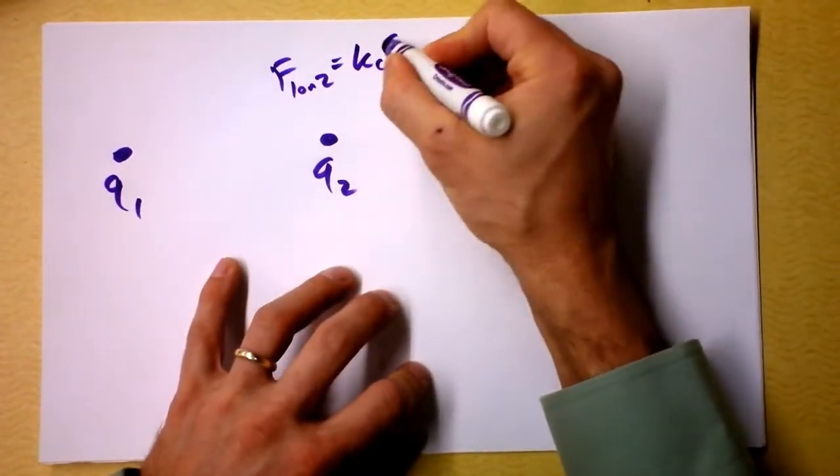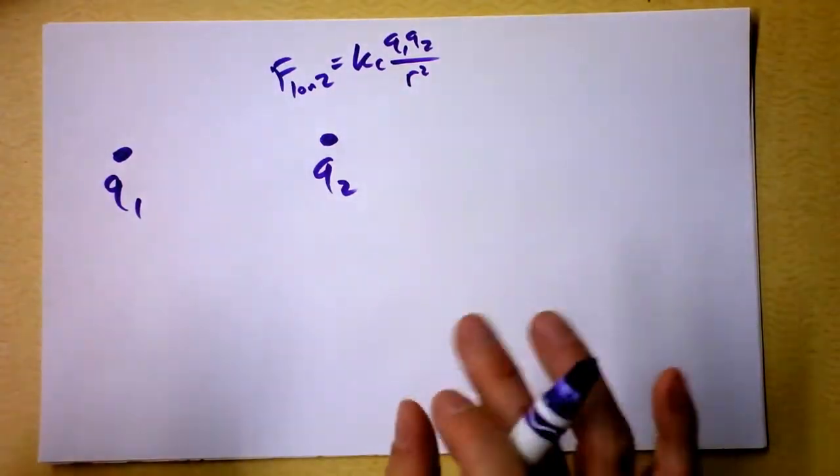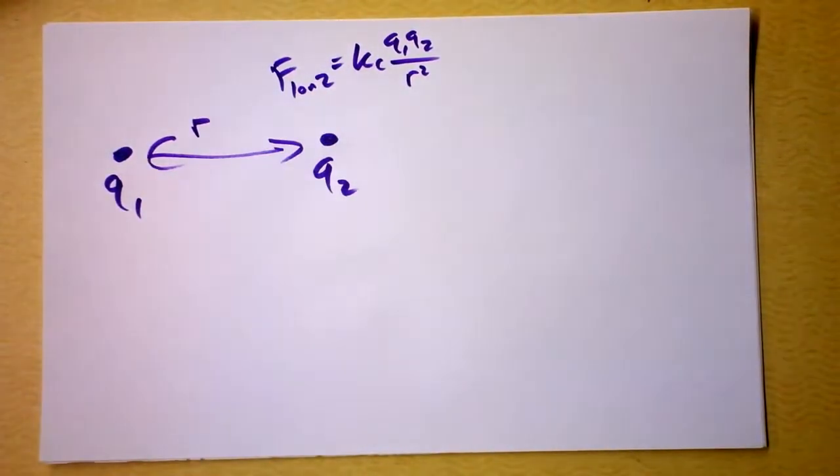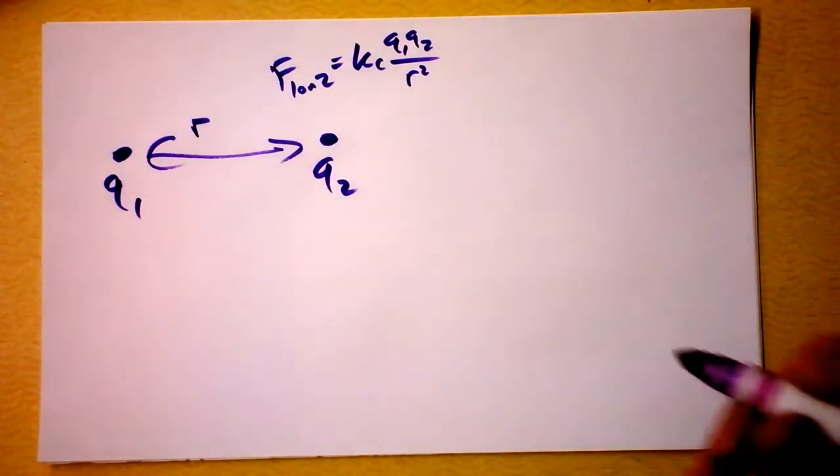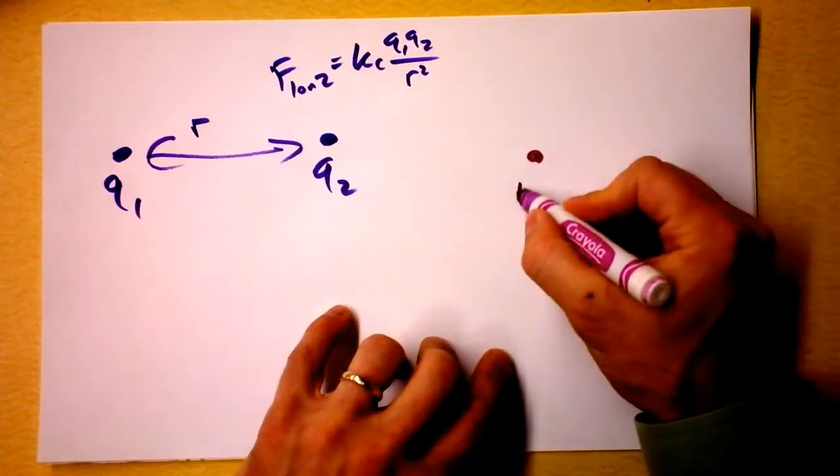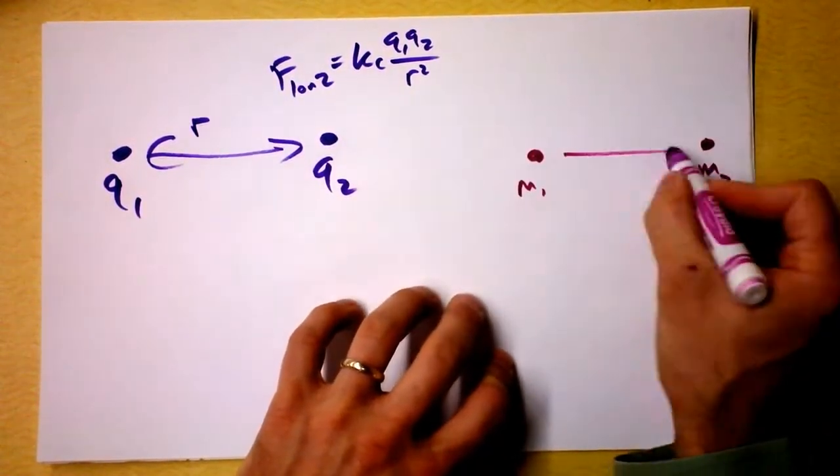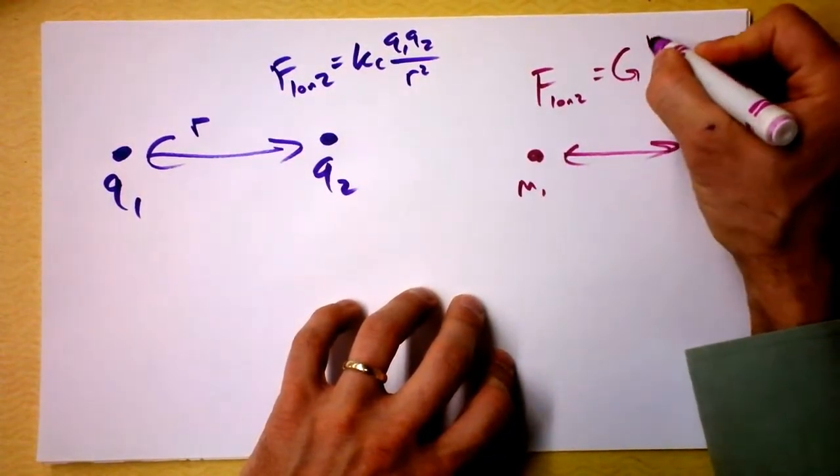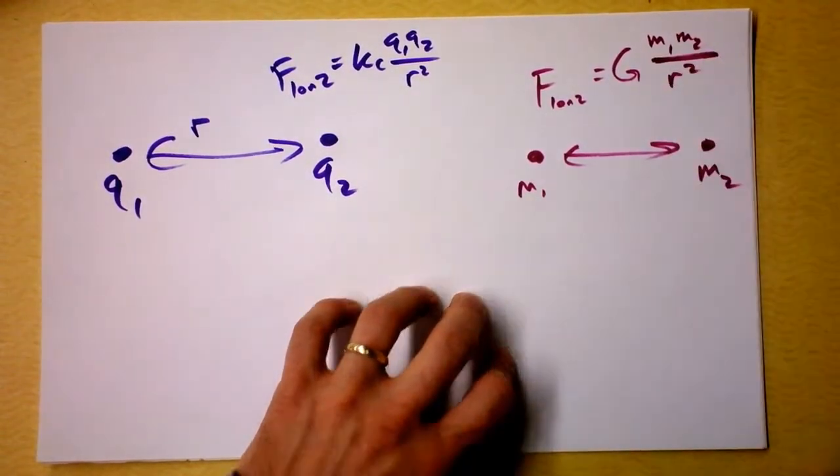But I also want to say we got KcQ1Q2 over R squared, and this distance is R. Just like in gravitation, we can talk about a point mass here and a point mass over here. We can talk about the distance between them and say the force one on two is capital G times the mass of thing one times the mass of thing two over the distance between them squared.